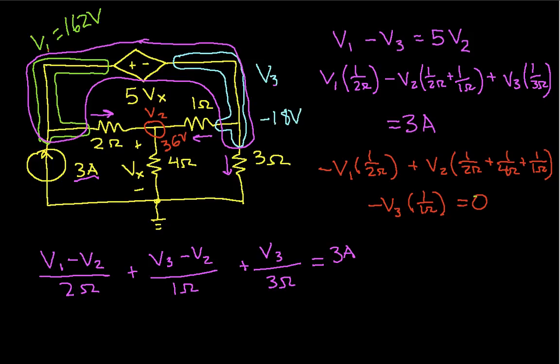So there you have it. We've done nodal analysis on a fairly complicated circuit, complicated in the sense that it had a dependent voltage source that was not connected to the reference node. So this pretty much finishes this example. We'll see you later.